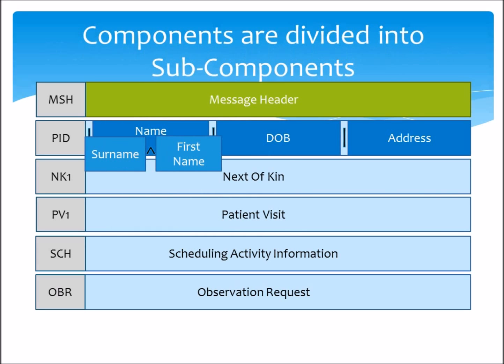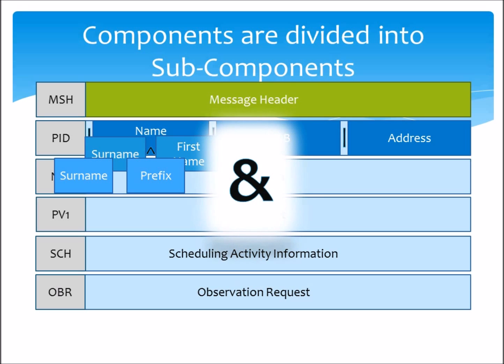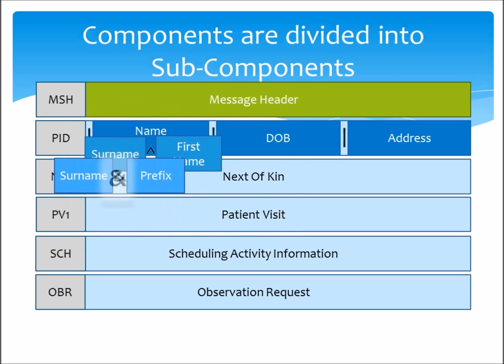We can also go a step further, as some components can also be divided up into subcomponents. For instance, the surname can be divided into two, creating a surname and a surname prefix subcomponent. And these we delimit by the ampersand character. Notice how we now have two items representing the patient's surname. You'll need to be wary of this if you're doing integration work, as addressing these can be a little fiddly.